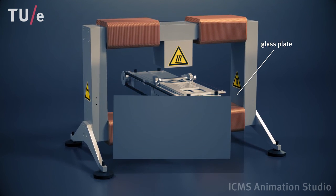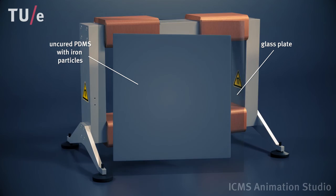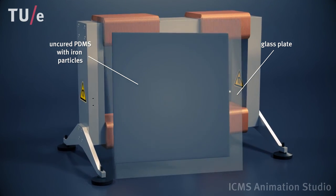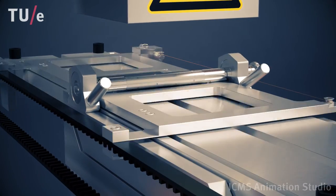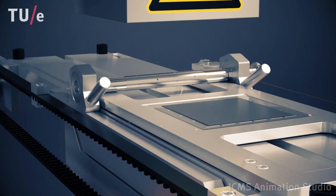On a glass substrate, we apply a thin film of liquid polymer containing magnetic microparticles. This substrate is placed in a home-built apparatus on a moving stage.